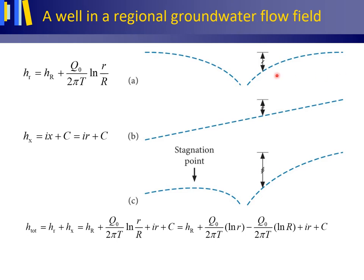This figure shows the potentiometric surface — the pumping cone or drawdown curve, in Dutch 'afpomingskegel' or 'ontrekkingskegel' — due to groundwater extraction by a pumping well in cross-section view. Figure A shows the absence of a regional groundwater flow field, and figure C shows the presence of a regional groundwater flow field. Figure B shows the potentiometric surface of the regional groundwater flow field itself. Note that the curve of C is obtained by summation of the curves for A and B.